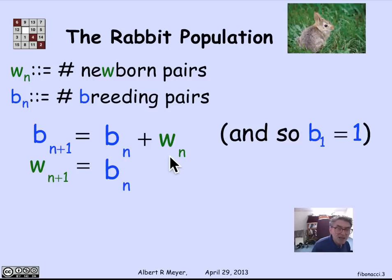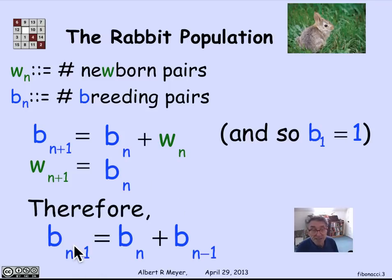Now I can take this Wn and replace it by a Bn minus 1. That's Wn plus 1, so I need to left shift. And what we wind up with is the recurrence relation that says that Bn plus 1 is equal to Bn plus Bn minus 1.